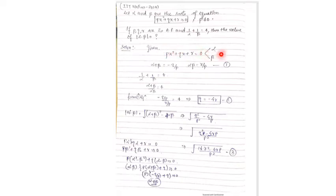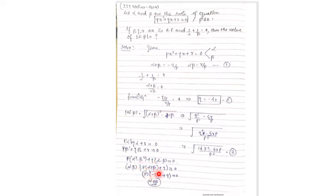Since alpha and beta are roots, we write p·alpha² + q·alpha + r = 0 and p·beta² + q·beta + r = 0. Subtracting these two equations gives p(alpha² - beta²) + q(alpha - beta) = 0. Factoring out (alpha - beta) yields p(alpha + beta) + q = 0, which is satisfied since alpha + beta = -q/p. This confirms alpha ≠ beta.